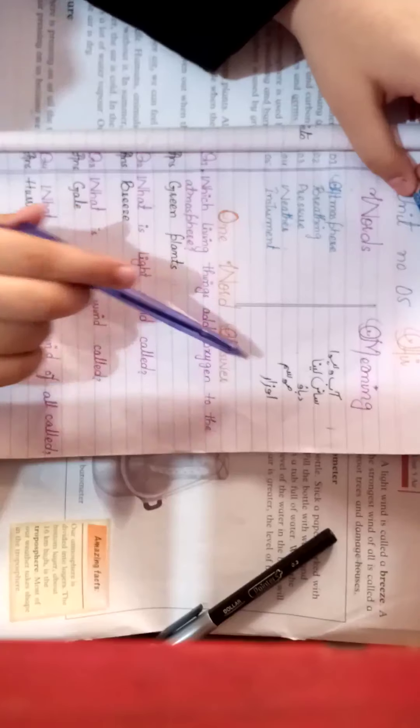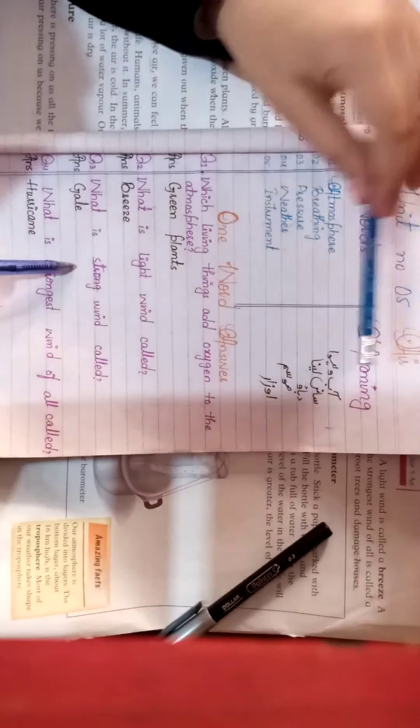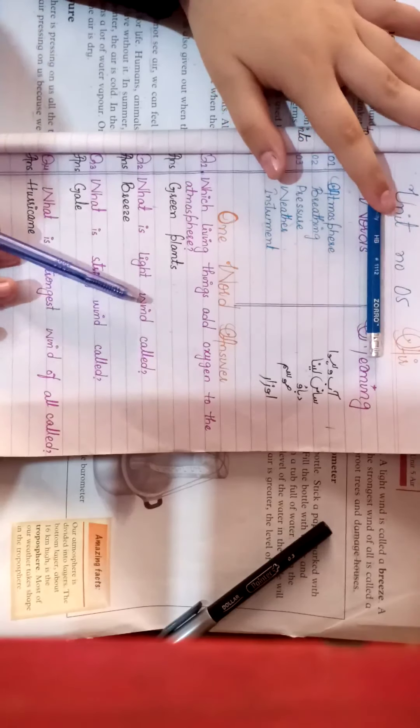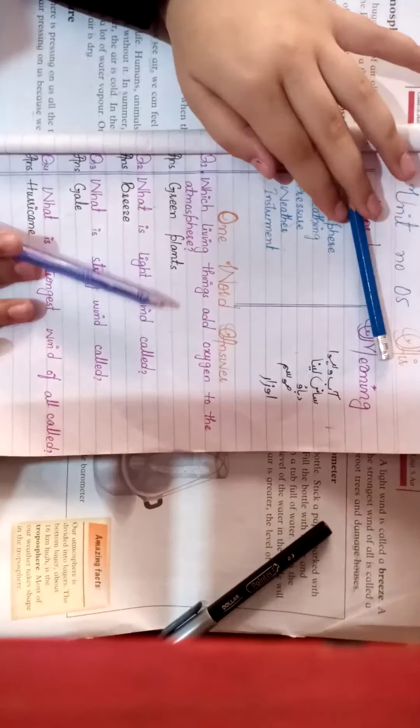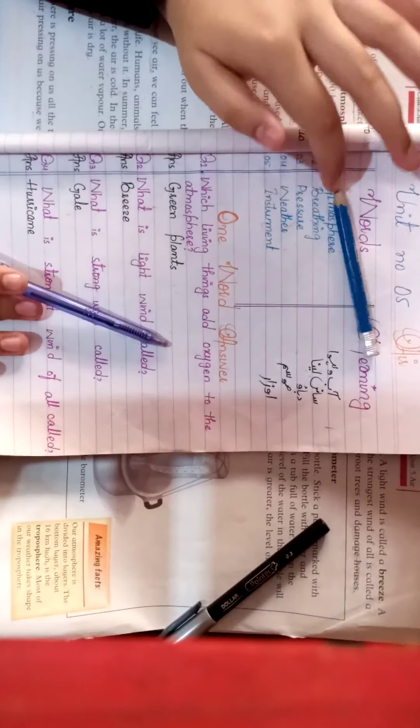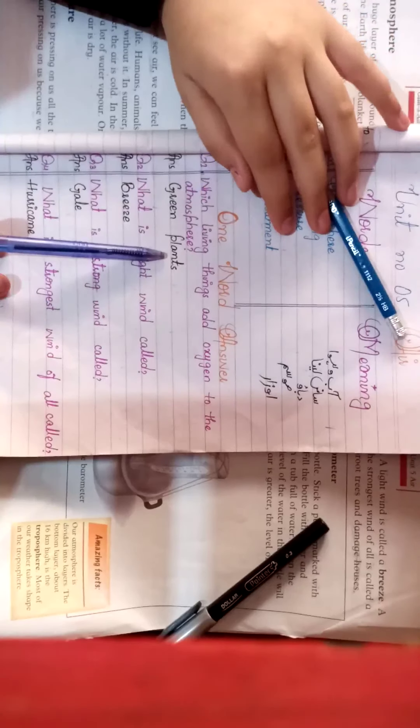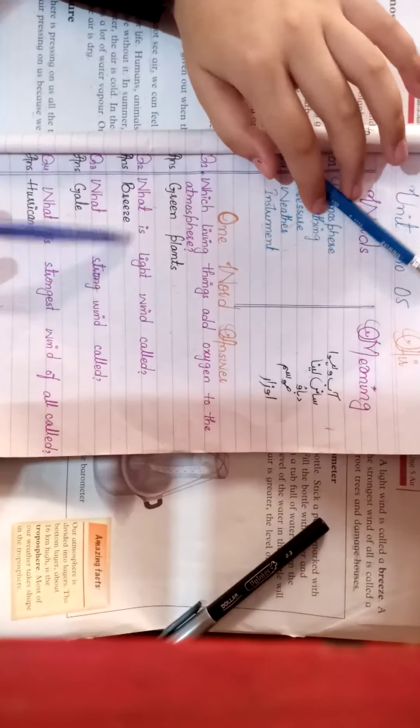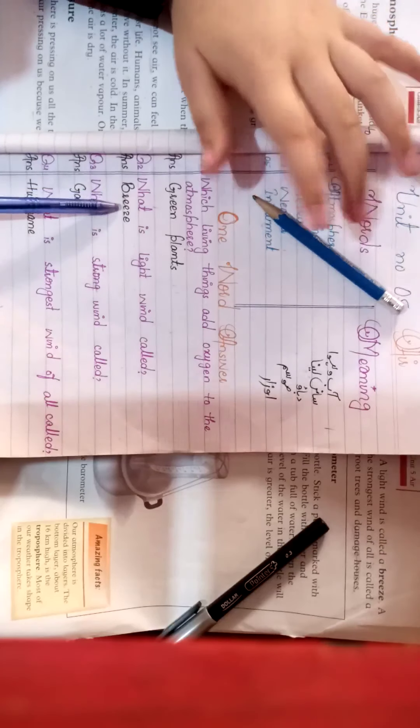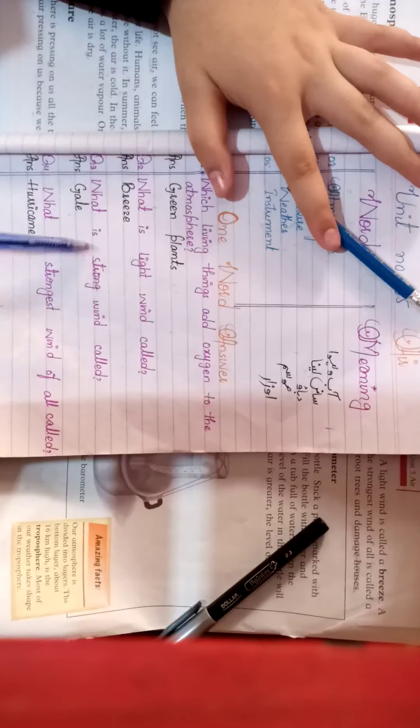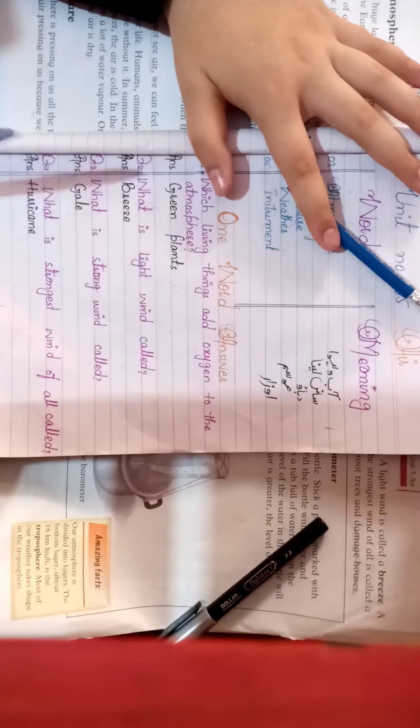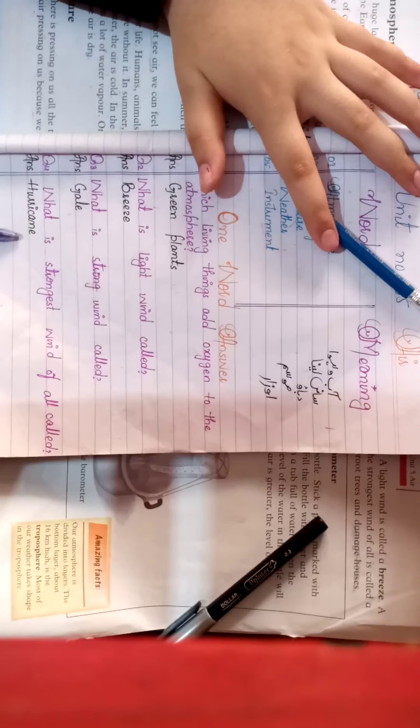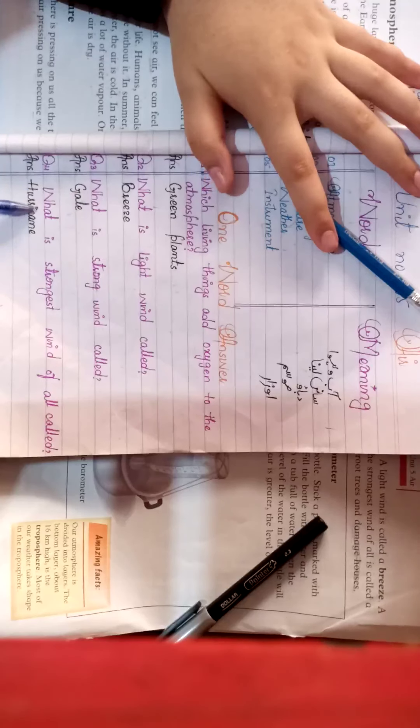One word answers. Question 1: Which will add oxygen to the atmosphere? Green plants. Question 2: What is light wind called? Breeze. What is strong wind? Storm. Which wind will damage and uproot trees? Storm.